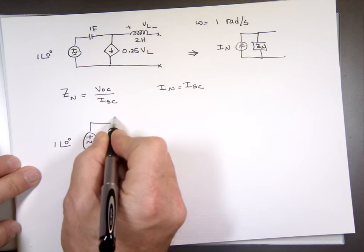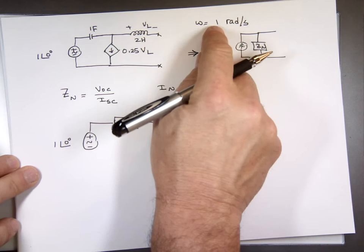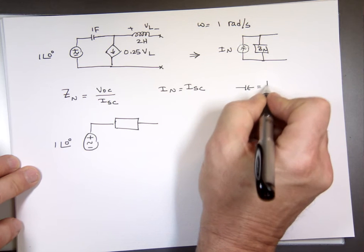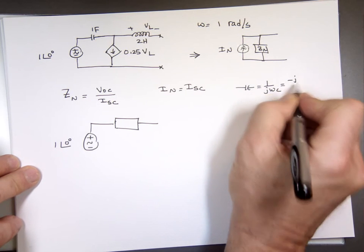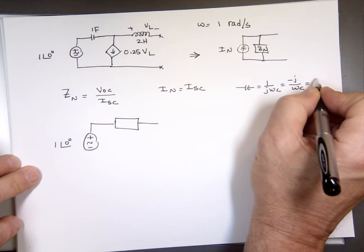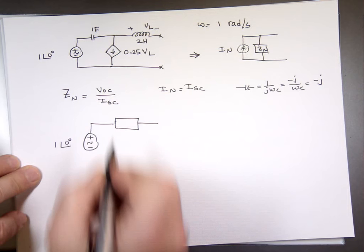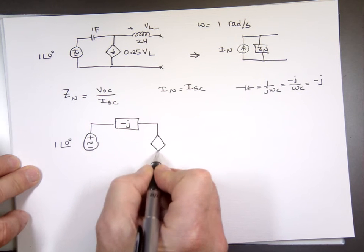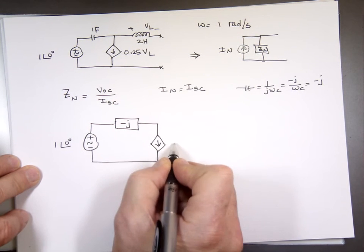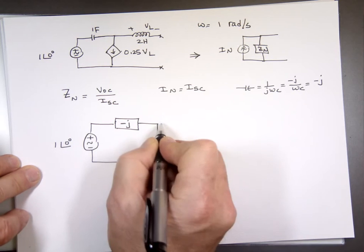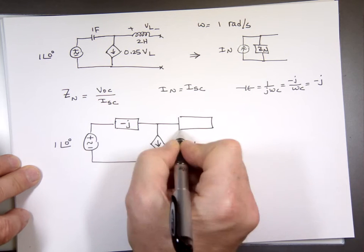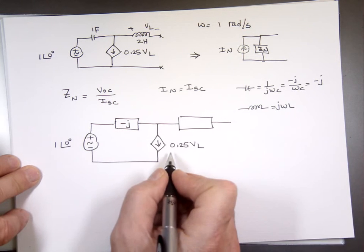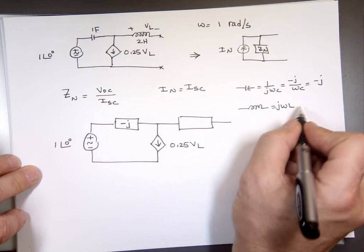The capacitor impedance is 1 over jωC, which is negative j over ωC. Since ω is 1 and C is 1, that's negative j. The inductor impedance is jωL. Omega is 1 and L is 2, so that's 2j.